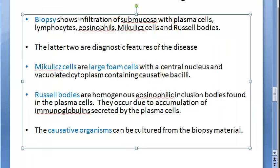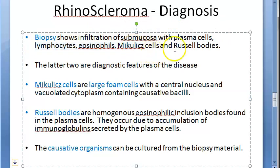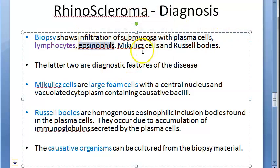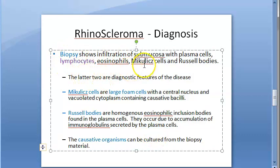For diagnosis, a biopsy is taken. The biopsy shows infiltration of the submucosa containing plasma cells, lymphocytes, eosinophils, Mikulicz cells, and Russell bodies. Lymphocytes, plasma cells, and eosinophils are common findings, but the Mikulicz cells and Russell bodies are the diagnostic features specific to rhinoscleroma.